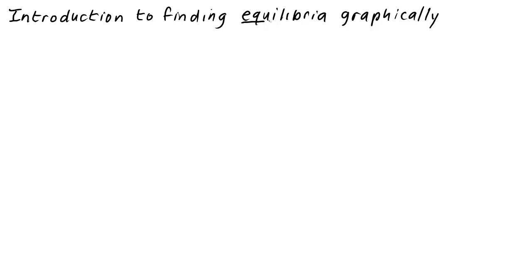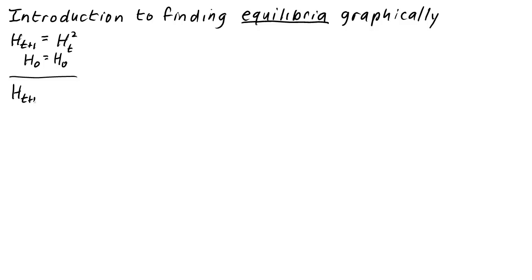How can we apply this idea to finding equilibria of dynamical systems? Let's imagine we had a dynamical system that squared the value of the state variable at each time step. Let's write this dynamical system as h_{t+1} = h_t², where h_t is our state variable. We can rewrite the dynamical system in terms of our function f(x) = x² as h_{t+1} = f(h_t). If we happened to start at a number h₀ that was the same as its square, then this evolution rule wouldn't change the value of h₀ — we would be at an equilibrium.